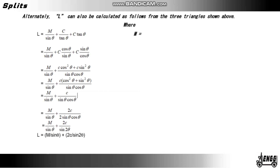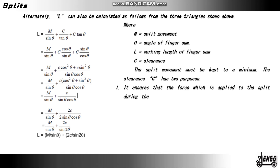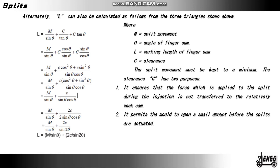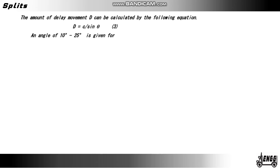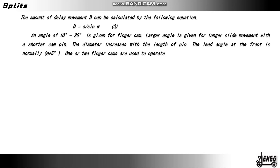In the above formula: M = split movement, θ = angle of finger cam, L = working length of finger cam, C = clearance. The split movement must be kept to a minimum. The clearance C has two purposes: one, it ensures that the force applied to the split during injection is not transferred to the relatively weak cam; two, it permits the mold to open a small amount before the splits are actuated. In certain cases this movement can be used to withdraw the core from the molding. The delay movement D can be calculated as: D = C / sin θ. An angle of 10° to 25° is given for the finger cam; larger angles are given for longer slide movement with a shorter cam. The diameter increases with the length of the pin. The lead angle at the front is normally θ + 5°. Two finger cams are used to operate each split depending on the split size.